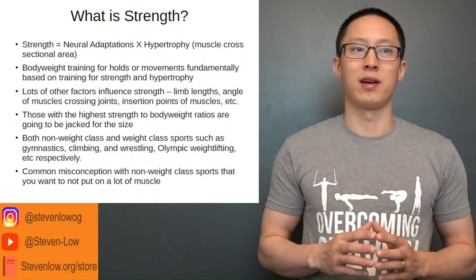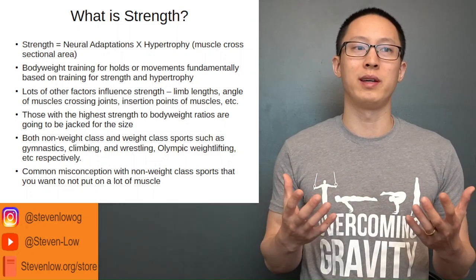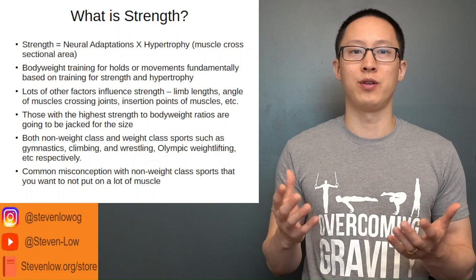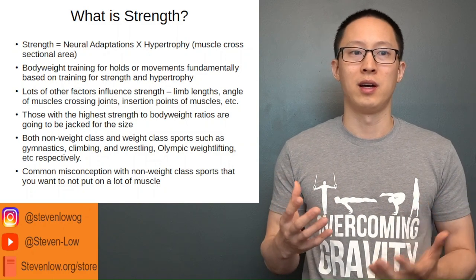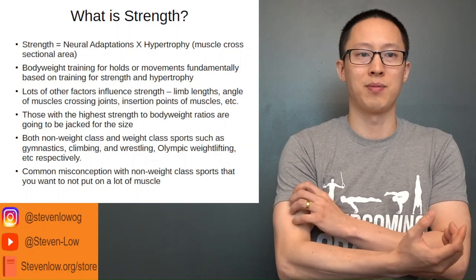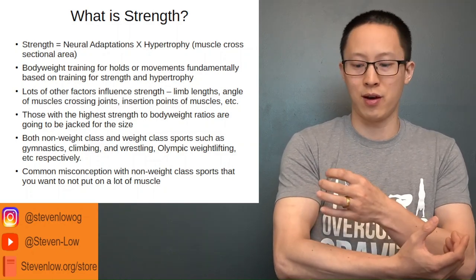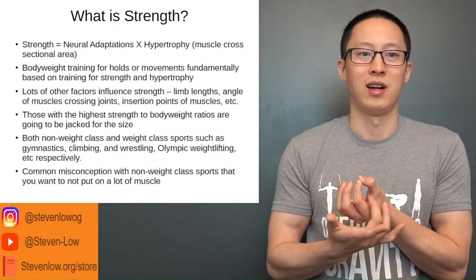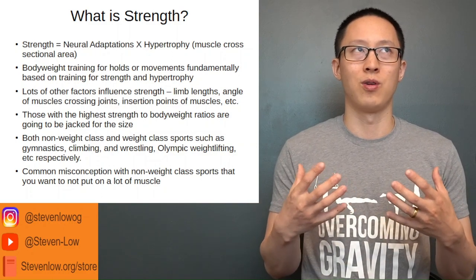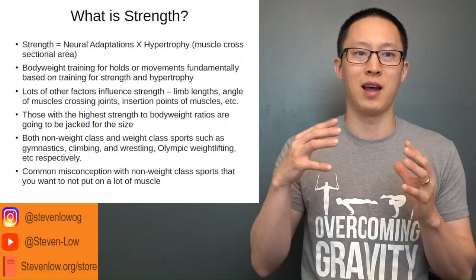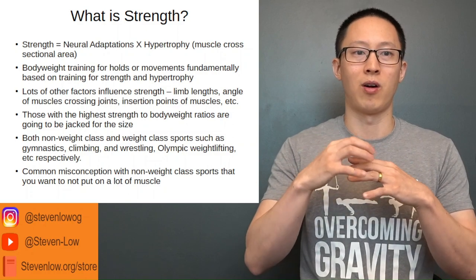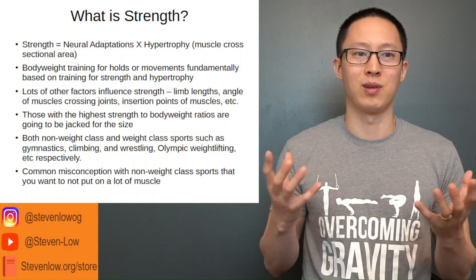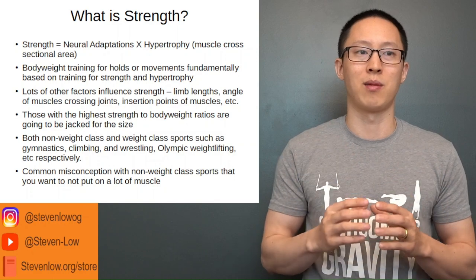So what is strength? The strength equation can generally be expressed as: strength equals neural adaptations times hypertrophy, or the muscle cross-sectional area. If you took a muscle such as your biceps and pulled it out, the cross-sectional area is basically the circular round shape of the muscle, which contains all the components of the myosin and actin heads as they overlap, pull, and contract the muscle because of individual sarcomeres contracting on top of each other.